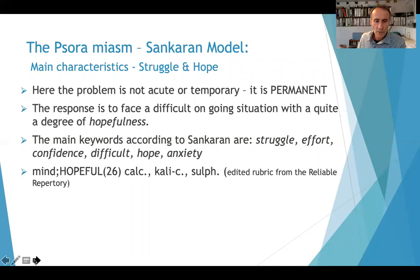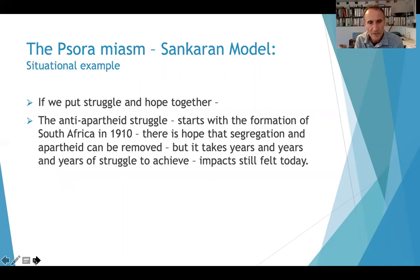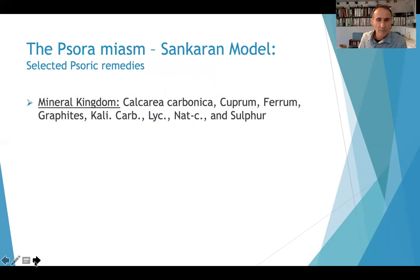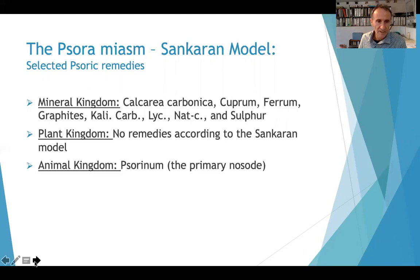The rubric 'mind: hopeful' has 26 remedies — I've edited out a couple like Kali-Carb and Sulphur. Sulphur is one of the main Psoric miasm remedies. As a situation example, combining struggle and hope, looking at our own political history, we have the anti-apartheid struggle. For a long time there was segregated apartheid. It took years of continuous struggle, and at times people felt 'when will it happen, how will it happen?' but the struggle and the hope continued. Some selected Psoric remedies: Calc-Carb, Cuprum, Kali-Carb, Sulphur. Sankaran says interestingly that there are no Psoric remedies in the plant kingdom — they're more likely typhoid, which we'll come to later. In the animal kingdom there are not many either; we think of the primary nosode Psorinum.